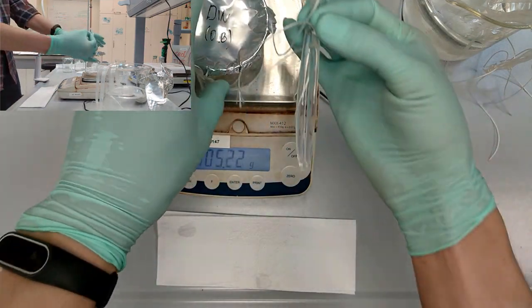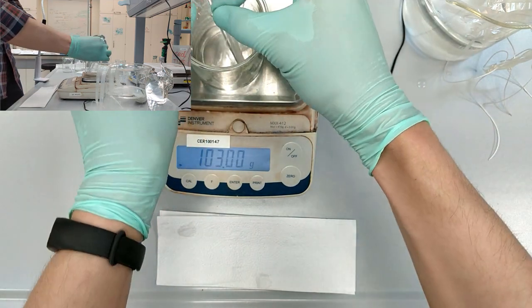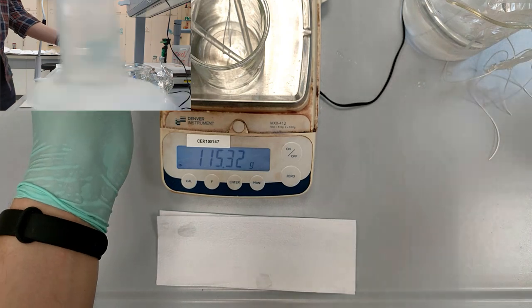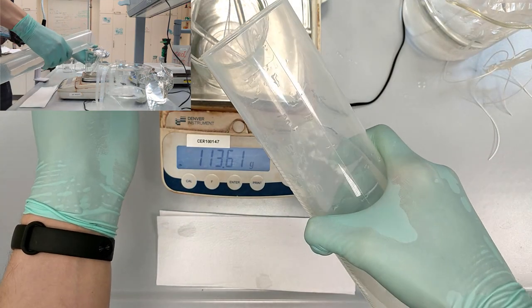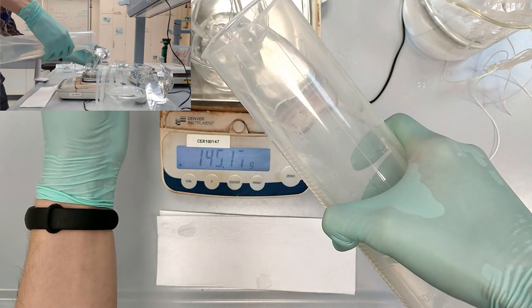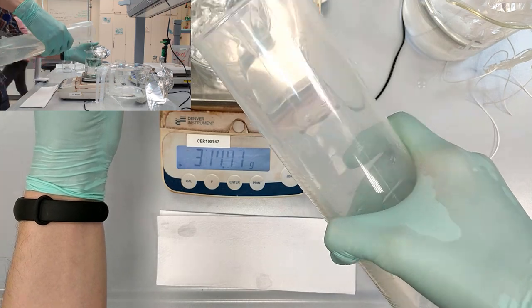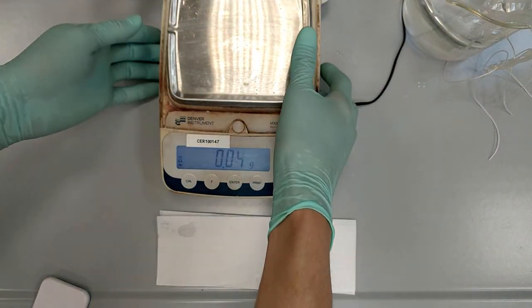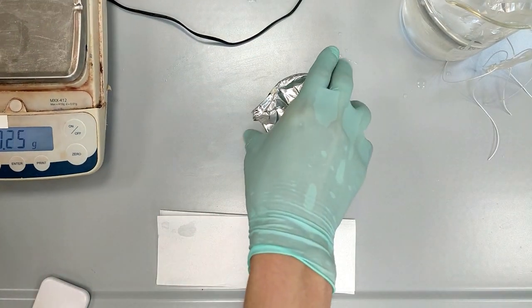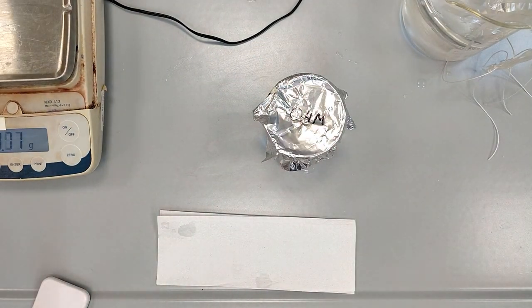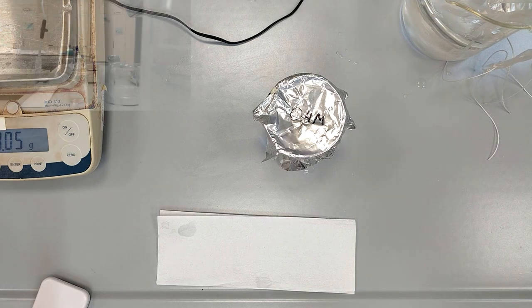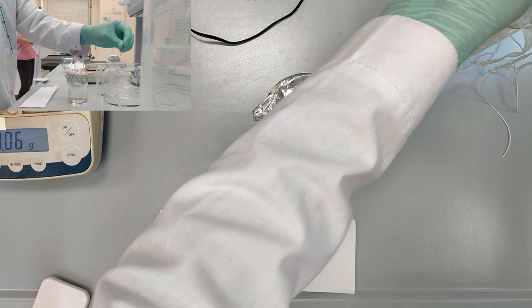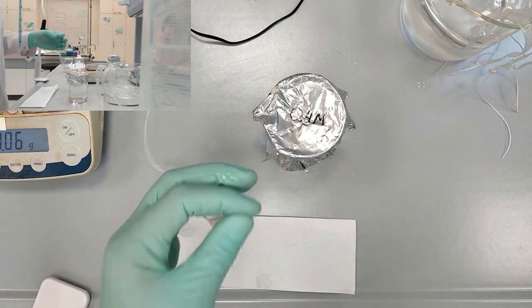Label the beaker, put the dialysis tube inside and pour 200 ml of water. Now prepare the 0.4 molar concentration dialysis tube.